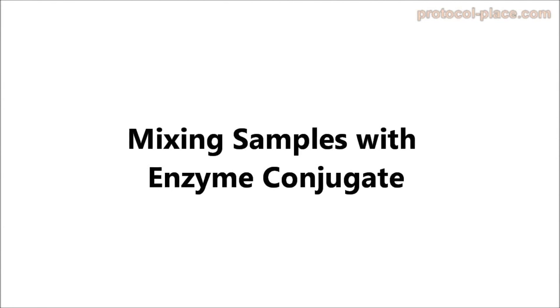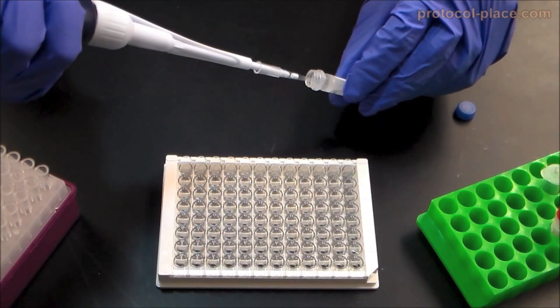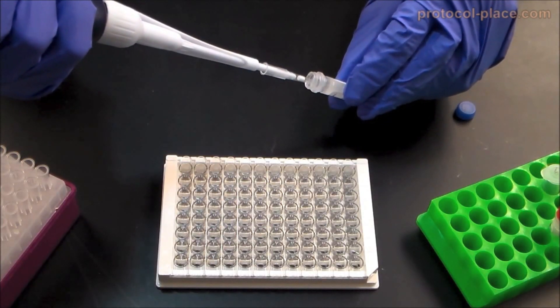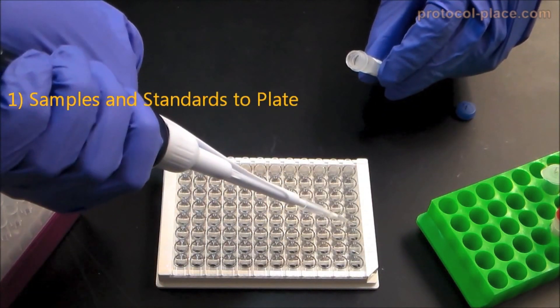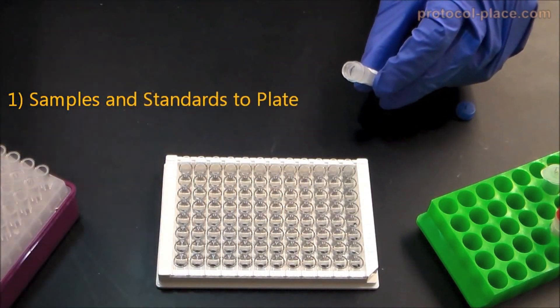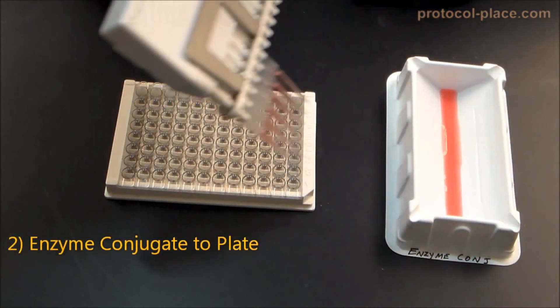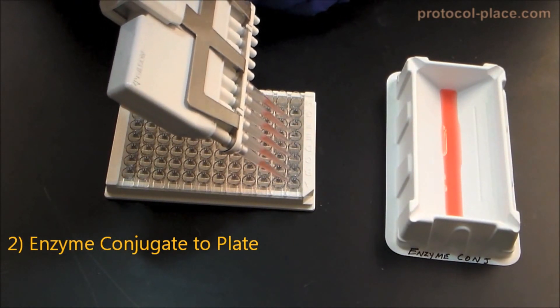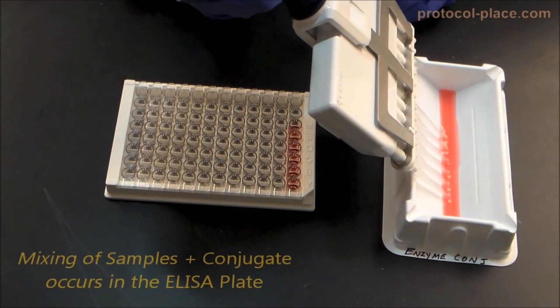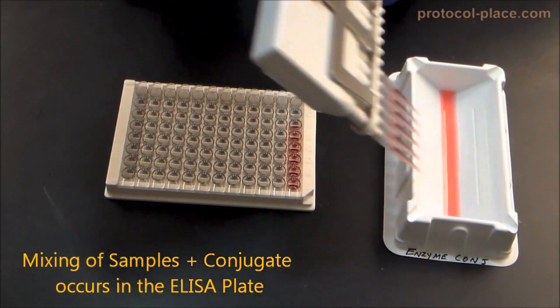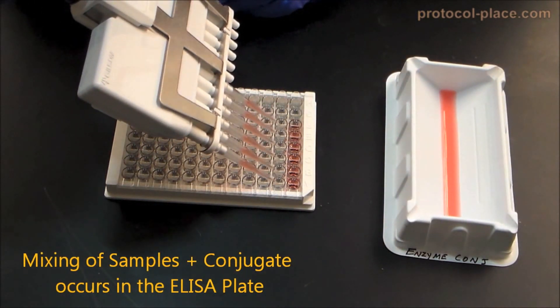Mixing samples with enzyme conjugate. Some protocols may allow the user to first add their samples and standards directly to the ELISA plate and then add the enzyme conjugate to the plate immediately afterwards. In other words, the mixing of samples with enzyme conjugate is to be done within the ELISA plate itself.